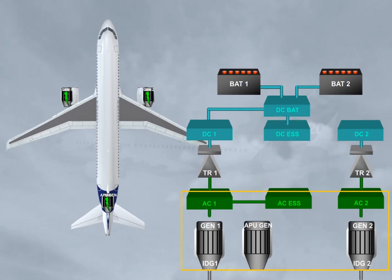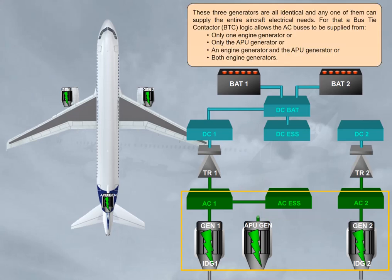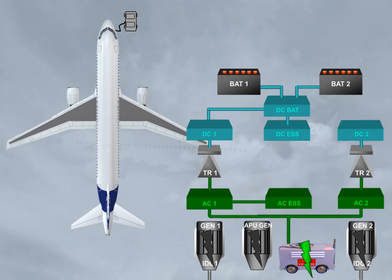For that, a bus tie contactor, BTC logic, allows the AC buses to be supplied from only one engine generator, or only the APU generator, or an engine generator and the APU generator. On the ground, the AC buses can be supplied by an external power source through the BTC logic.